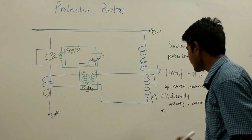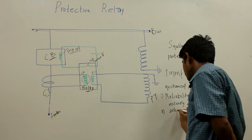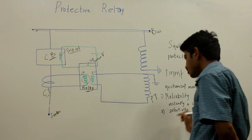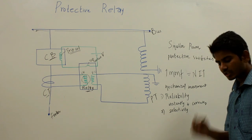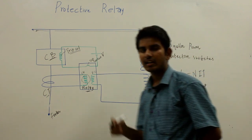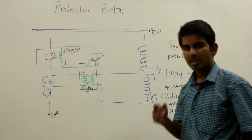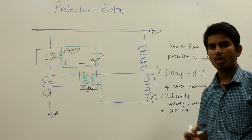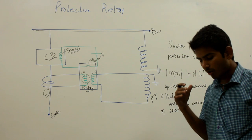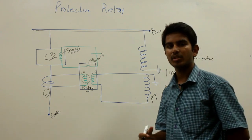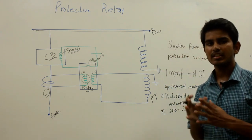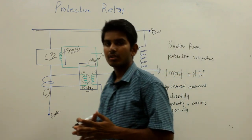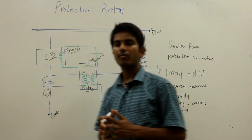The second functional requirement is selectivity. The relay has to operate only in those conditions for which it is commissioned. There may be some typical conditions during which the relay may not need to operate, or it may operate after some definite time delay. The relay must be sufficiently capable to choose the appropriate conditions to operate and isolate the fault.